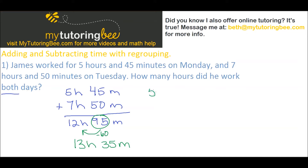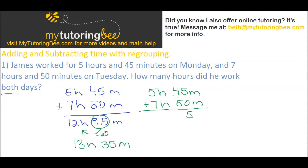I'm going to show you how to do that by rewriting this problem with regrouping, just like we normally carry extra numbers over to the other place value. So I add up my ones place: 4 plus 5 is 9, but 6 of those are going to move over to the hours as one extra hour, so I can add it up in that place value.